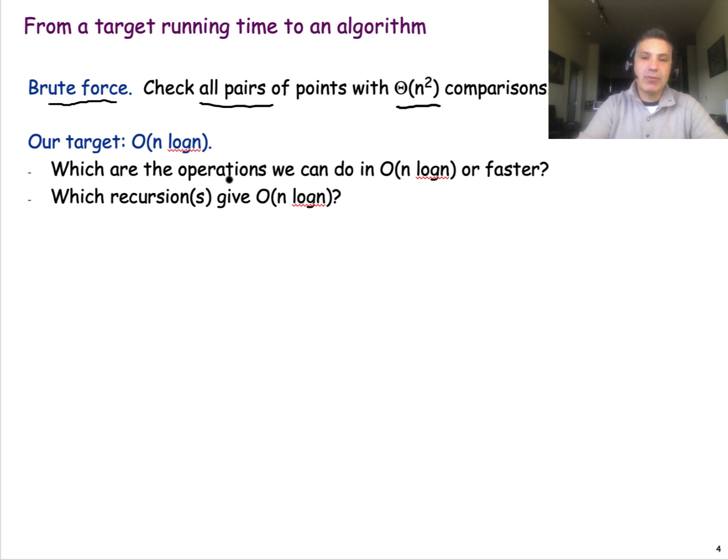You may ask yourself what is better than that. For instance, if we have an algorithm that is big O n log n, that would be a big achievement. Which are the operations that can be done in O(n log n)? We already know that we can do sorting in O(n log n). So if we design an algorithm that does a constant number of sorting operations, that is acceptable and it wouldn't really go beyond O(n log n).